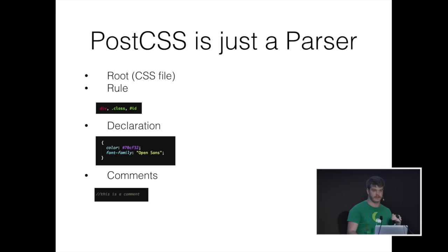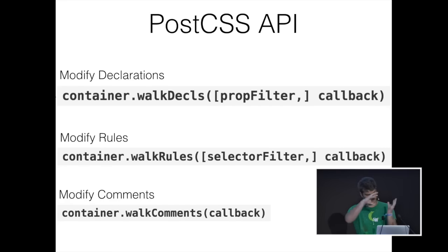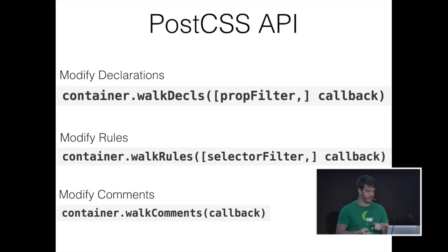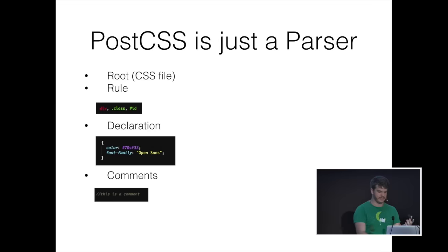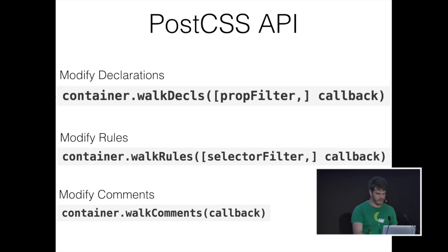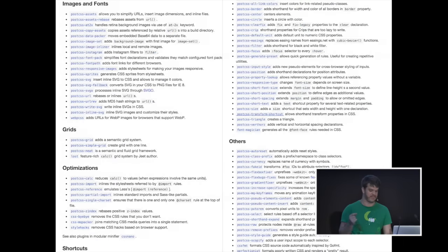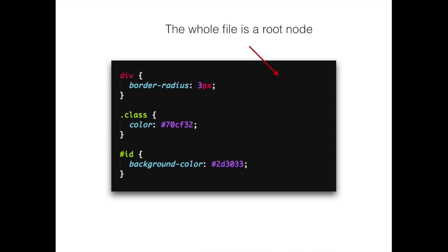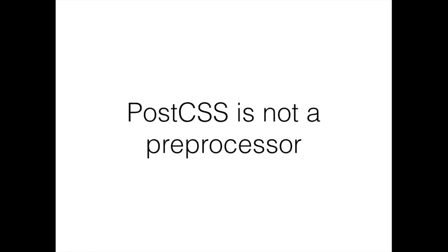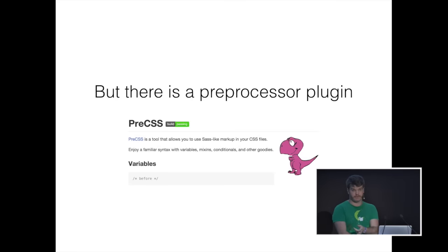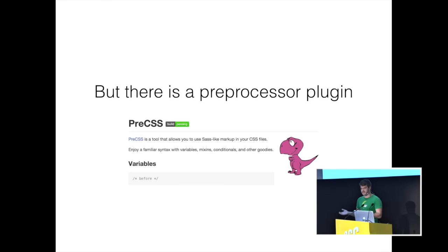PostCSS provides a nice API that is given to all plugins — we're passed an object called container. That object has a variety of functions: walkDeclarations, walkRules, and walkComments. They're essentially a forEach for those specific things. A declaration is a CSS property, a rule is a div or class, and a comment is a comment. The API comes with a lot of plugins, and because it's just an API that does nothing, the community provided everything else. There are about 200 of them. And there is a preprocessor plugin — preCss — which gives you everything Sass provides, but in JavaScript.